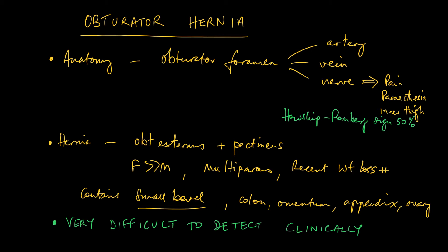There is an anatomical difference between the male and the female pelvis and this perhaps best explains why it's more common in females. The hernias contain small bowel in the main but have been described as containing colon, omentum, appendix and ovary.